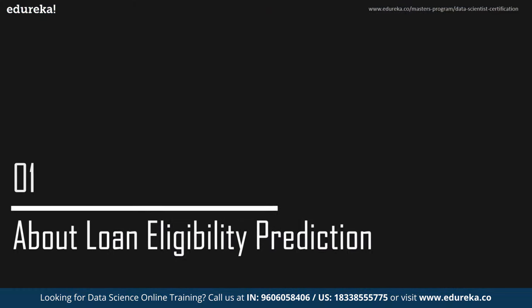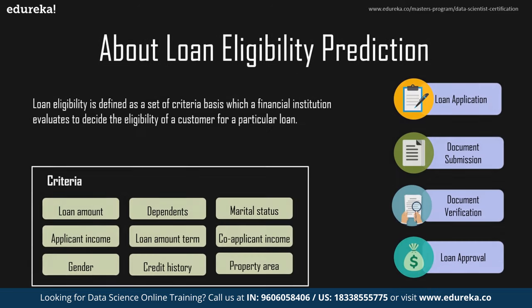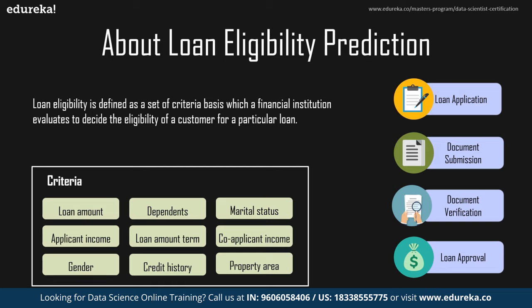First, let's understand what loan eligibility prediction is. Loans are one of the core businesses of banks as a lot of profit is gained through loan interest. Loan eligibility is decided after a long and intensive process of verification of documents and validation of criteria, which takes up a huge amount of time. This time-consuming process can be avoided by developing a system that can predict whether a person is eligible for the loan based on information filled in the loan application form.